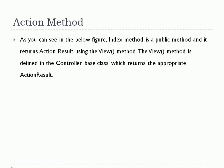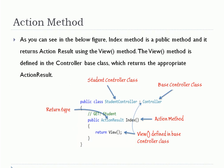Let us see one example of an action method. We have a StudentController. According to the rule, we name our controller as 'Student' ending with the word 'Controller'. The next important thing is it should be inherited from the Controller base class, which is already provided by the .NET framework and resides in the System.Web.Mvc namespace. We have one method in our class, and since it is public, it is an action method.